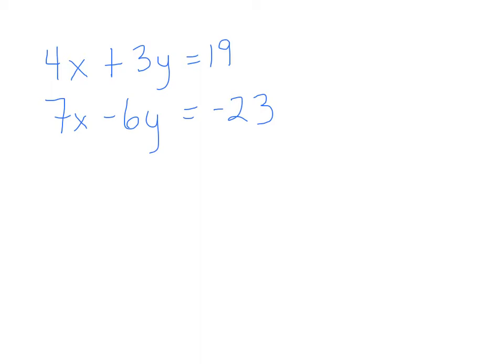You need to multiply one of the equations by a number so that once you multiply it, then they will cancel. Now here's what I mean by that. If I were to multiply the entire top equation by 2, what would it make this 3y? It would make it 6. And then 6y plus negative 6y would cancel.